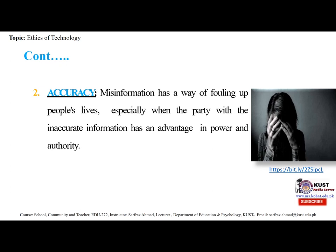Accuracy refers to how correct learners' use of the language system is, including their use of grammar, pronunciation and vocabulary. Accuracy is often compared to fluency when we talk about a learner's level of speaking or writing. Accuracy also refers to how close a measurement is to the true or accepted value. Precision is independent of accuracy — it is possible to be very precise but not very accurate, and it is also possible to be accurate without being precise. The best quality scientific observations are both accurate and precise.